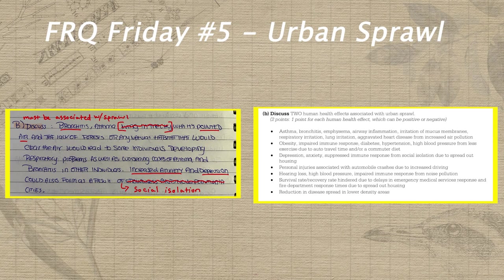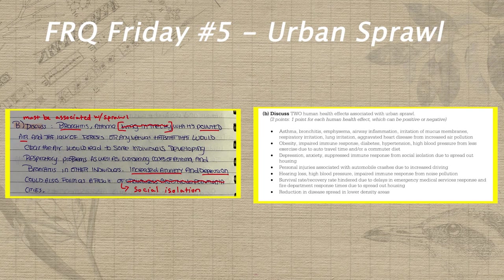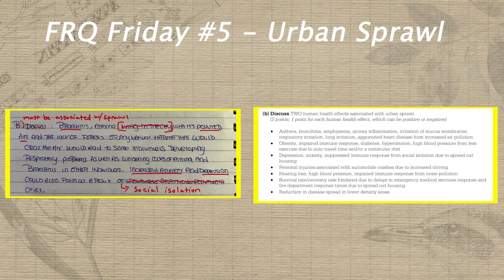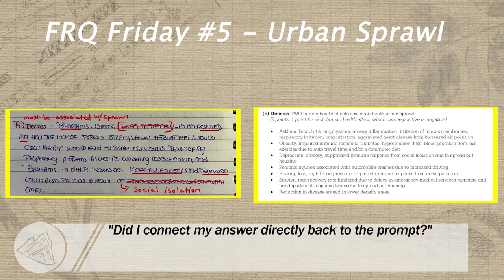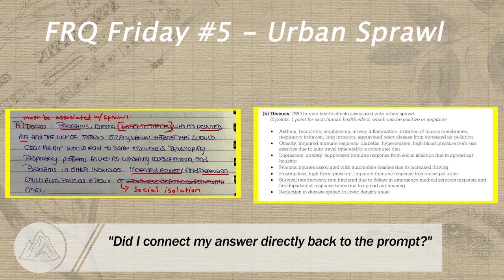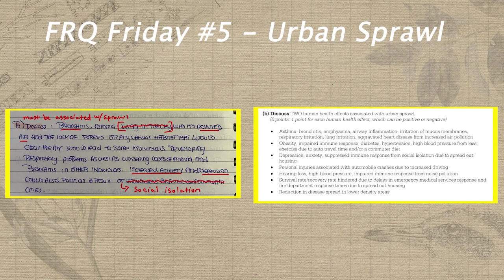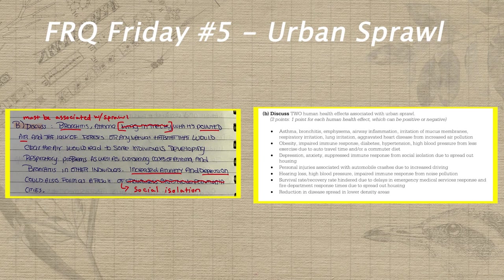In part B, Lean correctly identifies bronchitis due to air pollution, but she incorrectly links this to living in the city, as opposed to an actual increase in air pollution that results from urban sprawl. This is why writing to the prompt is so important. If you can get into the habit of asking yourself for every describe or explain prompt, did I connect my answer directly back to the prompt, you can avoid missed points like this. Unfortunately, Lean makes a similar mistake in her second answer for part B, correctly identifying increased anxiety, but connecting it to living in a crowded city rather than linking it to the social isolation that can result from urban sprawl.